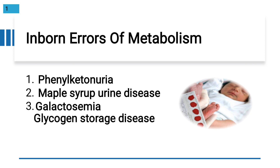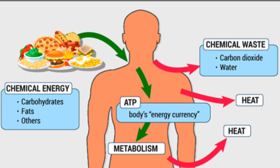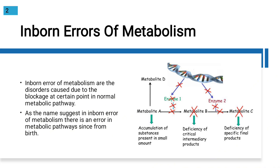Inborn errors of metabolism are disorders caused due to a blockage at a certain point in the normal metabolic pathway. The normal metabolic pathway runs in the body — for example, glucose is used in energy production and ATP is produced. The metabolism is disturbed at a certain point. As the name suggests, in inborn errors of metabolism there is an error in the metabolic pathway since birth.